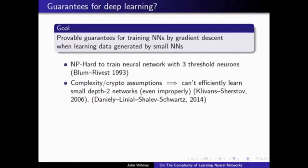If I give you some small neural network, use it to generate some labeled examples, can you learn that function — the function implied by the neural network? We don't really care about the proper learning setting here. We're interested in learning things improperly. I don't need to understand exactly what the weights are in the neural network generating my data; I just want to come up with some function that approximates it.